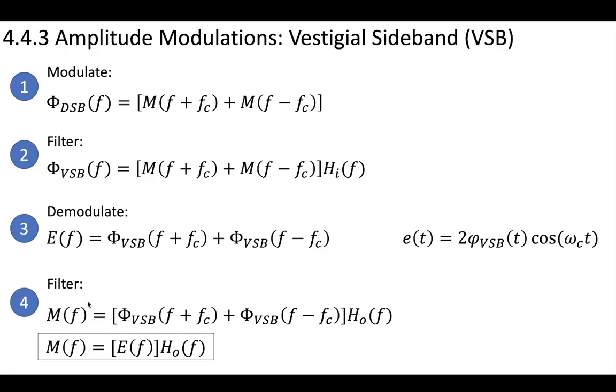However, there's still that problem of the fact that this filter did something to the message, right? It did something to the message that may have changed it a bit. And so we're going to have to apply a second filter to reshape our VSB signal so that our message can be recovered properly and without distortion.